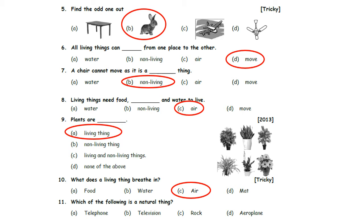Eleventh one: Which of the following is a natural thing? Option A: Telephone. Option B: Television. Option C: Rock. Option D: Aeroplane. Natural things means it was created by nature. Telephone, television, and aeroplane are man-made things. Only a rock is a natural thing. So, Option C is the correct answer.